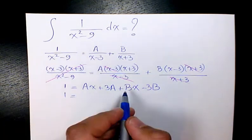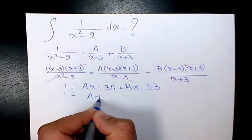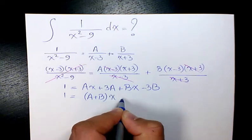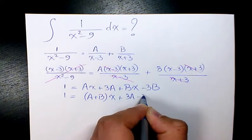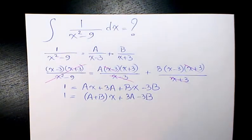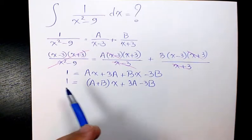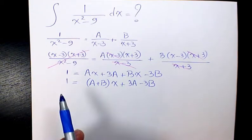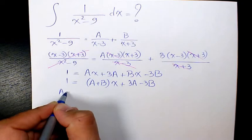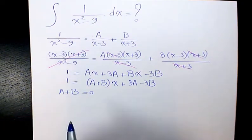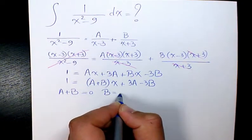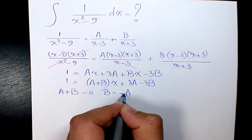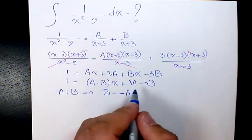Then you factor it, A plus B times x plus 3A minus 3B. So in here, since there is no x on the left hand side, it means that A plus B will be 0. It means that B will be negative A.